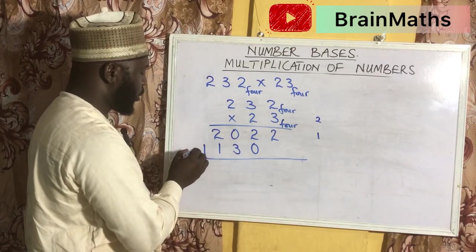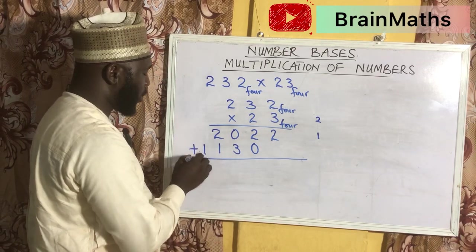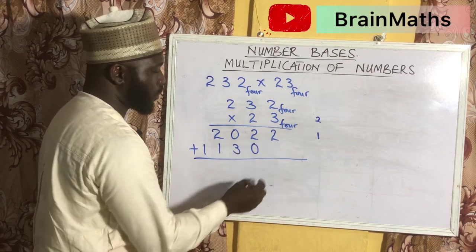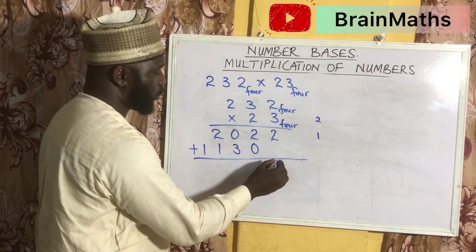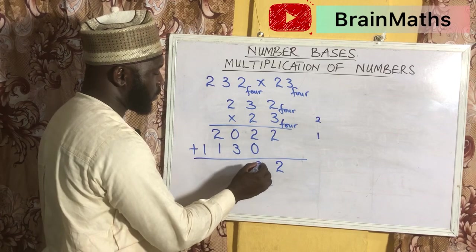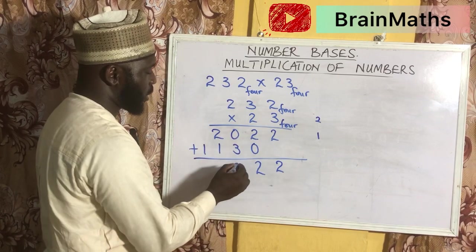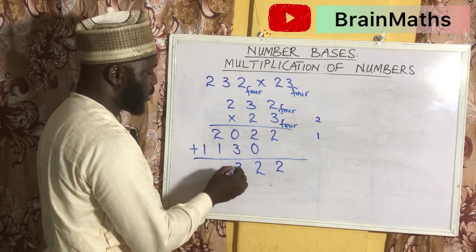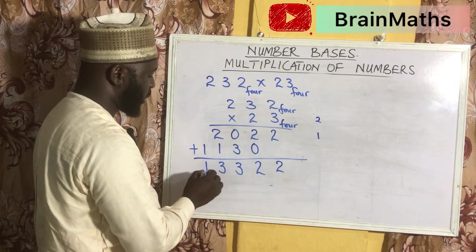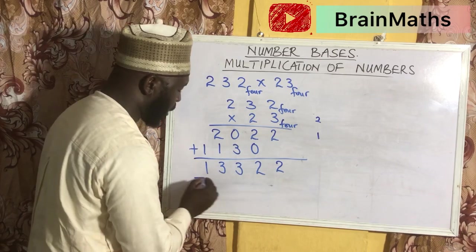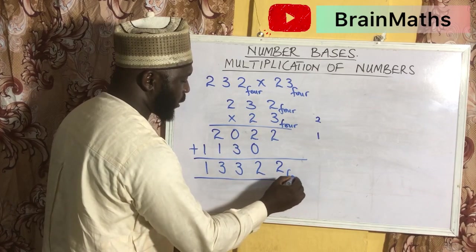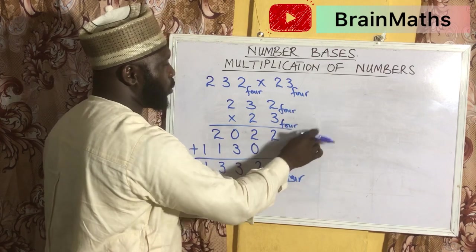So now we are going to add all the numbers together. 2 plus 0 is 2. 2 plus 0 is 2. 0 plus 3 is 3. 2 plus 1 is 3. And 1 plus 0 is 1. All in base 4.